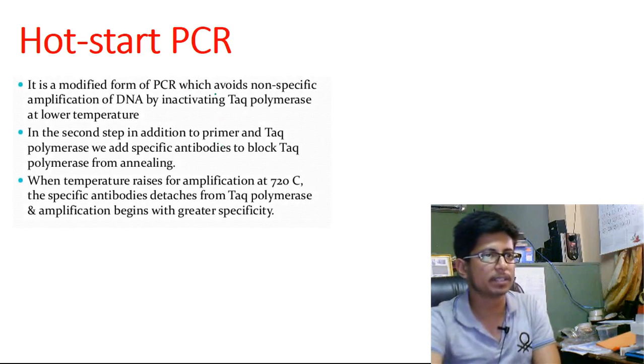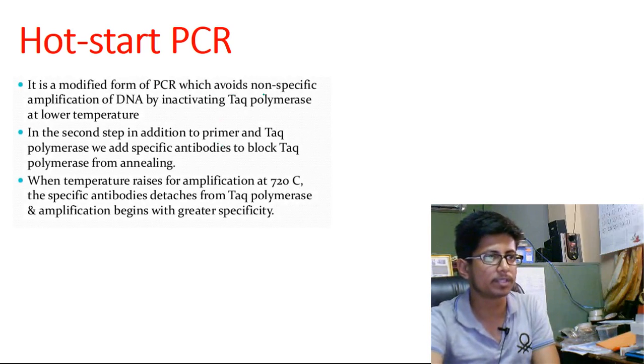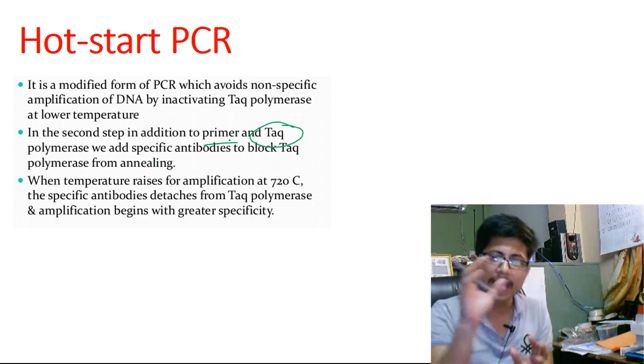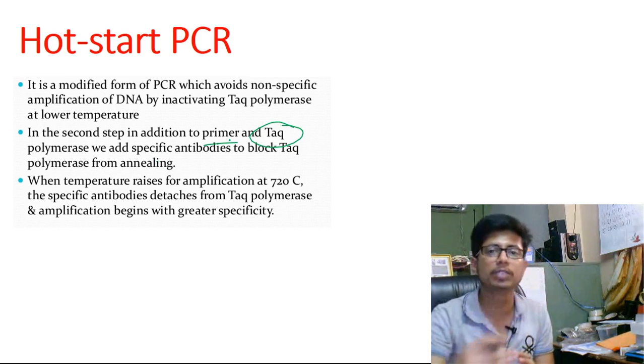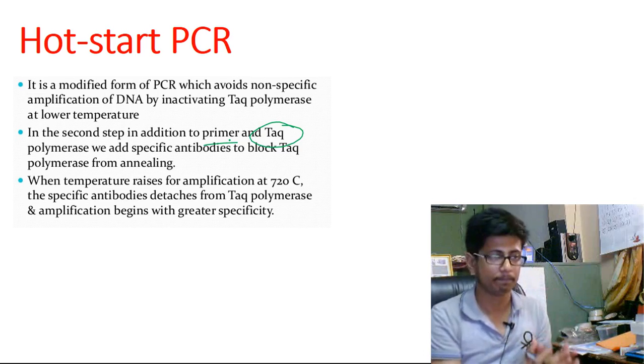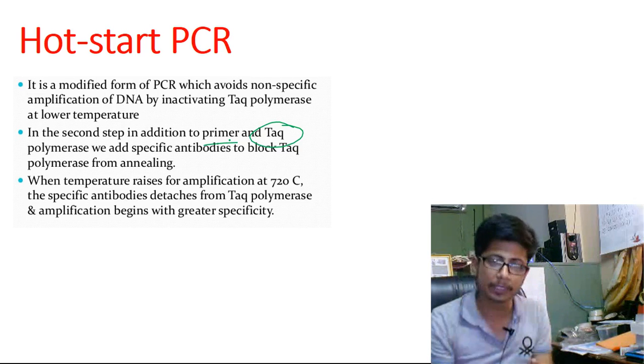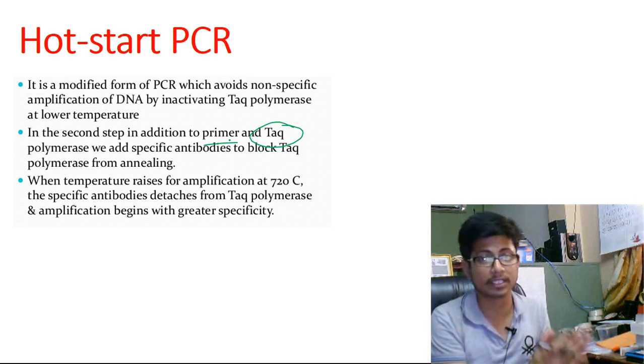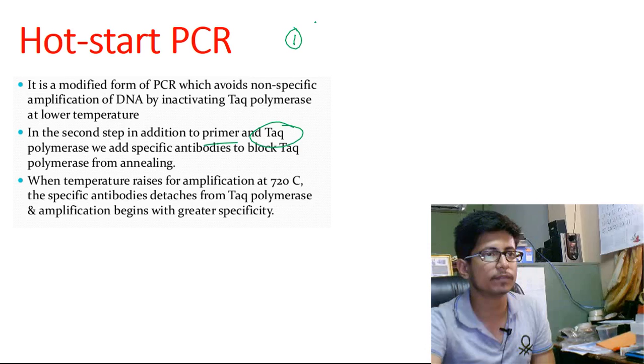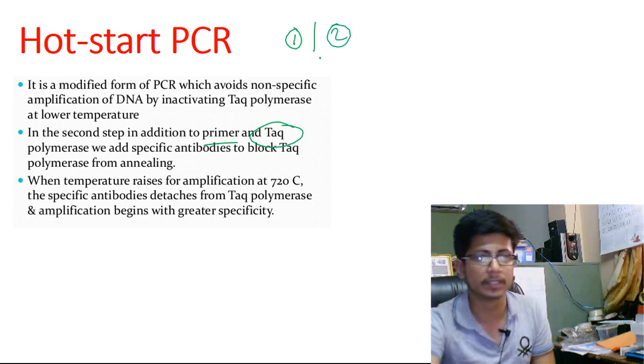The idea of hot-start PCR is a modified version to avoid non-specific amplification. In the second step, it adds the primer and the Taq polymerase. What we want to do is prevent the Taq polymerase from producing unwanted DNA. Secondly, we also prevent primers from binding to unwanted or unnecessary regions of the target DNA. There are two different stages of this whole process of hot-start PCR to work.